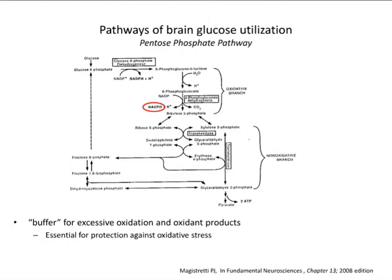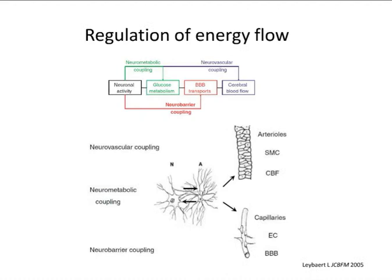Another important pathway is the pentose phosphate pathway, which can be considered a buffer to reduced oxygen. There are quite a lot of oxidative processes going on, and the molecule NADPH is important to buffer this excessive oxidation.